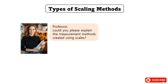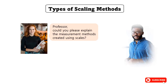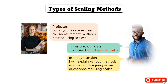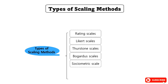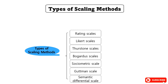Professor, could you please explain the measurement methods created using scales? In our previous class, I explained four types of scales. In today's session, I will explain various methods used when designing actual questionnaires using scales. There are various types of scaling methods, such as rating scales, Likert scales, Thurston scales, Bogardus scales, sociometric scale, Gutmann scale, and semantic differential scale.